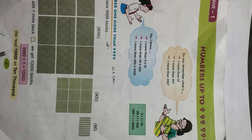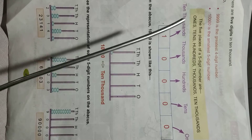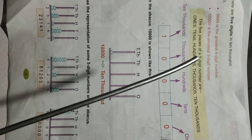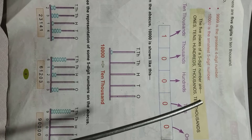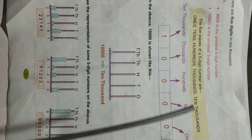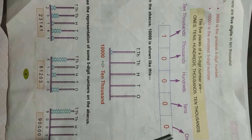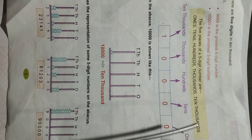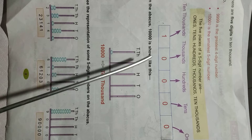You can see that there are 5 digits in 10,000. So, 9,999 is the greatest 4-digit number and 10,000 is the smallest 5-digit number. The 5 places of 5-digit numbers are 1s, 10s, 100s, 1000s, and 10,000. In this way we can see the place value.